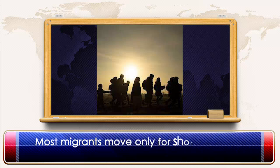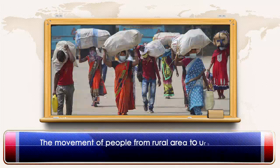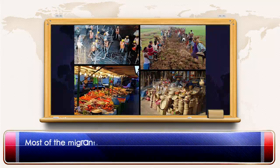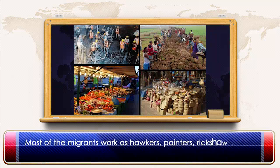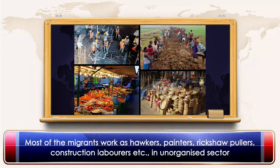Most migrants move only for short distances. The movement of people from rural area to urban area is known as rural to urban migration. Most of the migrants work as hawkers, painters, rickshaw pullers, construction labourers, etc., in the unorganised sector.